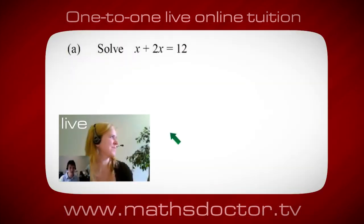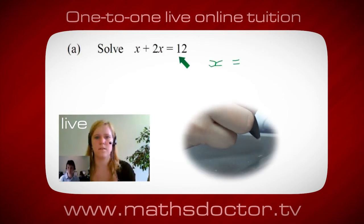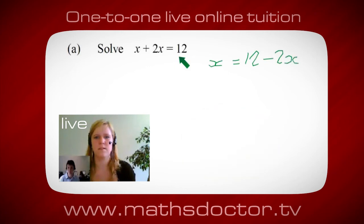Okay Marie, so let's have a look at this one. So solve x plus 2x equals 12. So what do you think you do first? Well I want x on its own so I would put x equals 12 minus 2x.